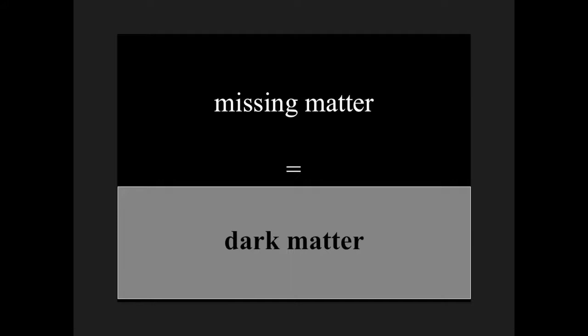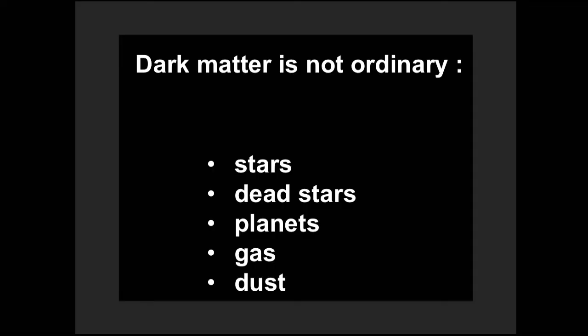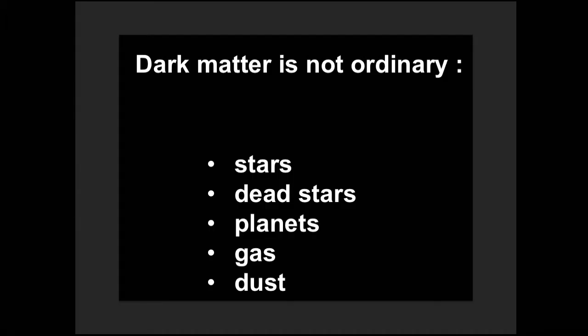We call that missing matter dark matter, because if it wasn't dark, we would see it and it wouldn't be missing. So what do we know about dark matter? It's not stars, because if it was stars, we would see it. But it's also not dead stars. Dead stars would be really good dark matter, they're dark, they're massive. However, to make dead stars is a very messy process and inefficient. It's also not planets. It's not gas or dust.